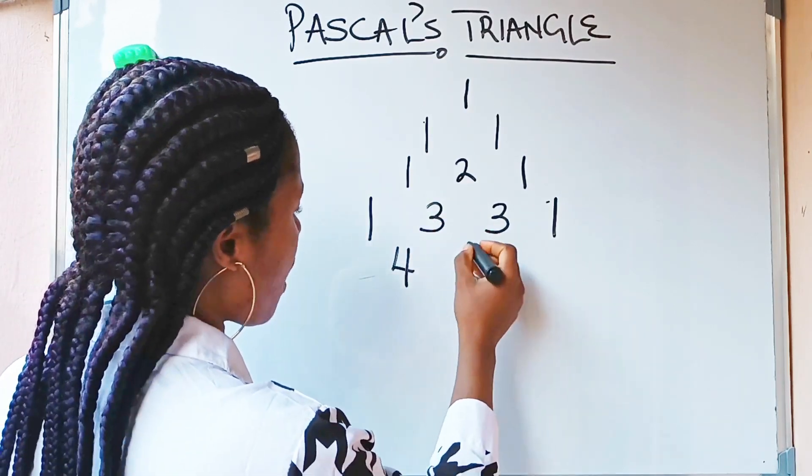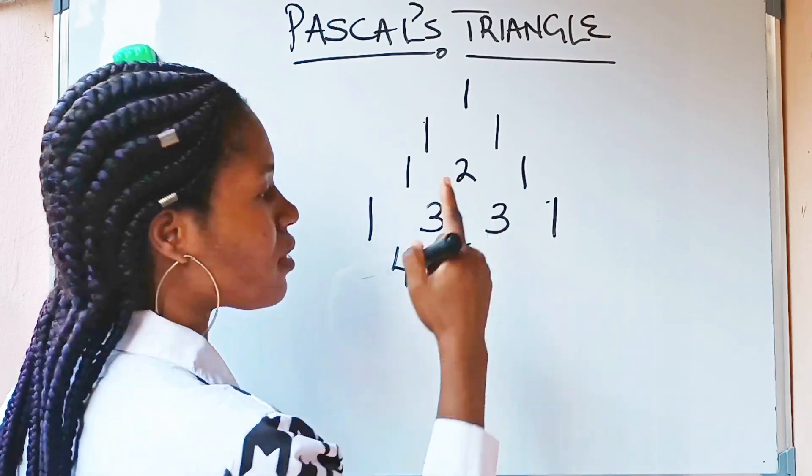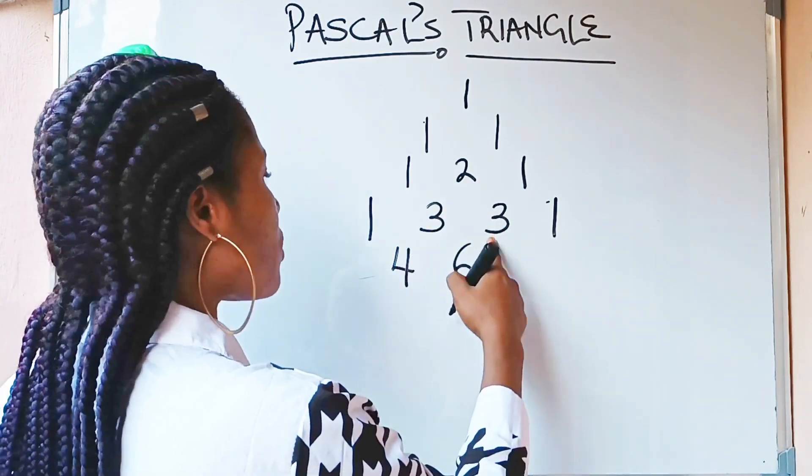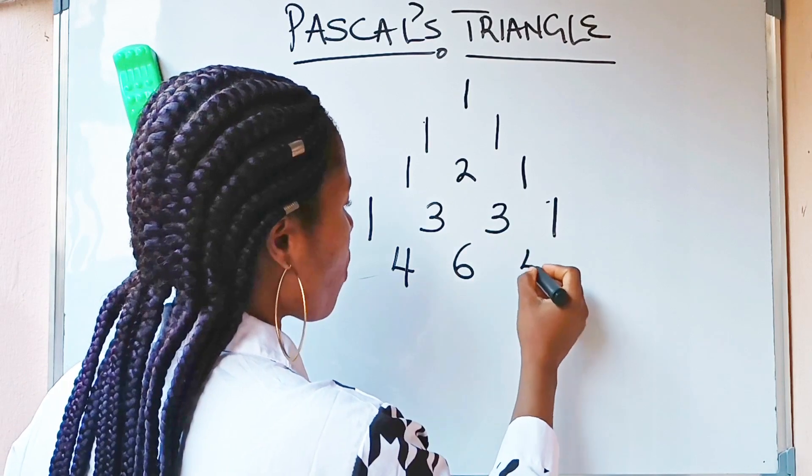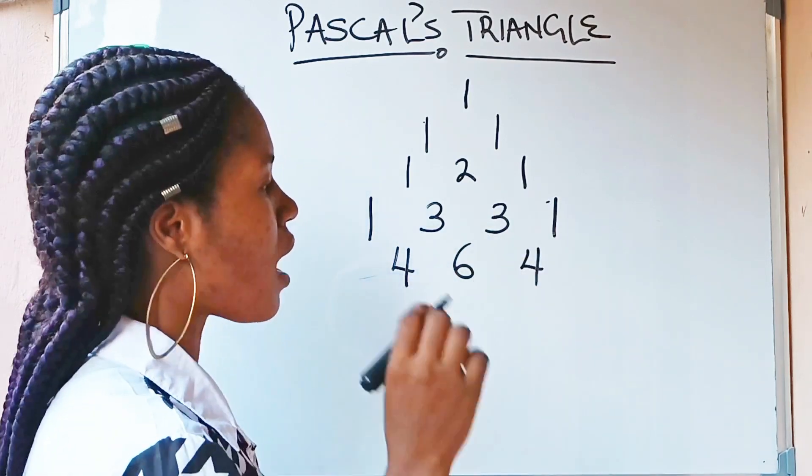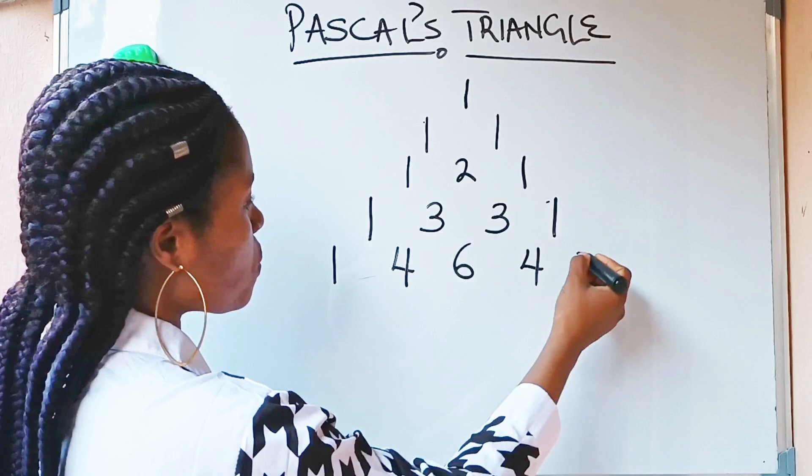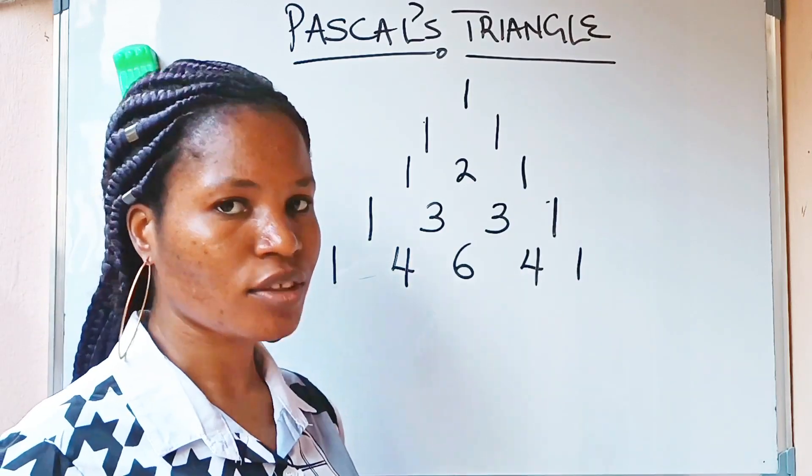So, 3 plus 3 will give me 6. I will write this 6 between 3 and 3. 3 plus 1 will give me 4. I will also write this 4 between 3 and 1. Now, I am through. I am going to complete it with 1 and 1.